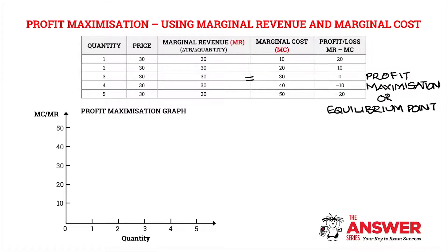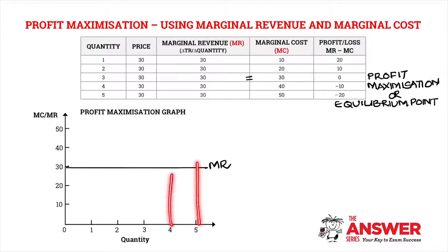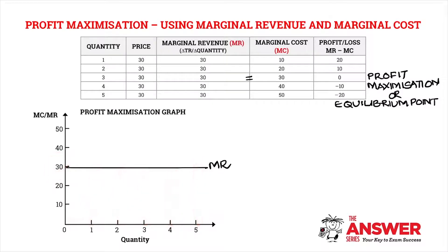So let's fill in our graph. We're going to start off by filling in our marginal revenue curve. Our marginal revenue curve is perfectly elastic. In our previous lesson, we established that the reason why it's perfectly elastic is because irrespective of the quantity being demanded, the price stays exactly the same, hence it being perfectly elastic.